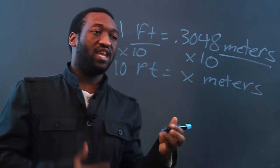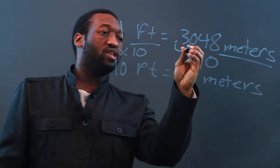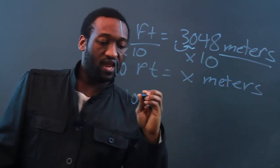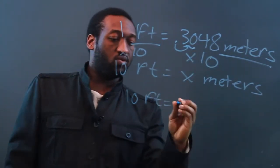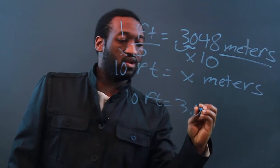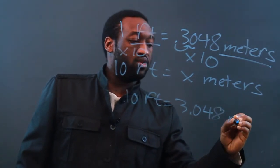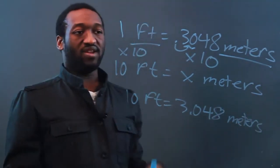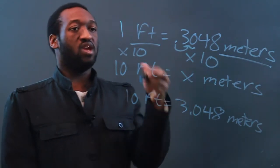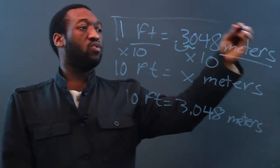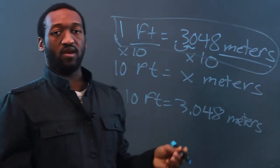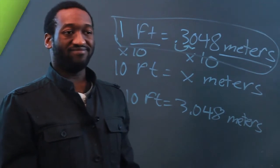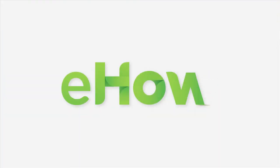Luckily, multiplication by ten is just moving the decimal over once. So ten feet is going to be equal to 3.048 meters. And there you have it — that's how you convert feet to meters. Use this equivalency right here. Thanks for watching.